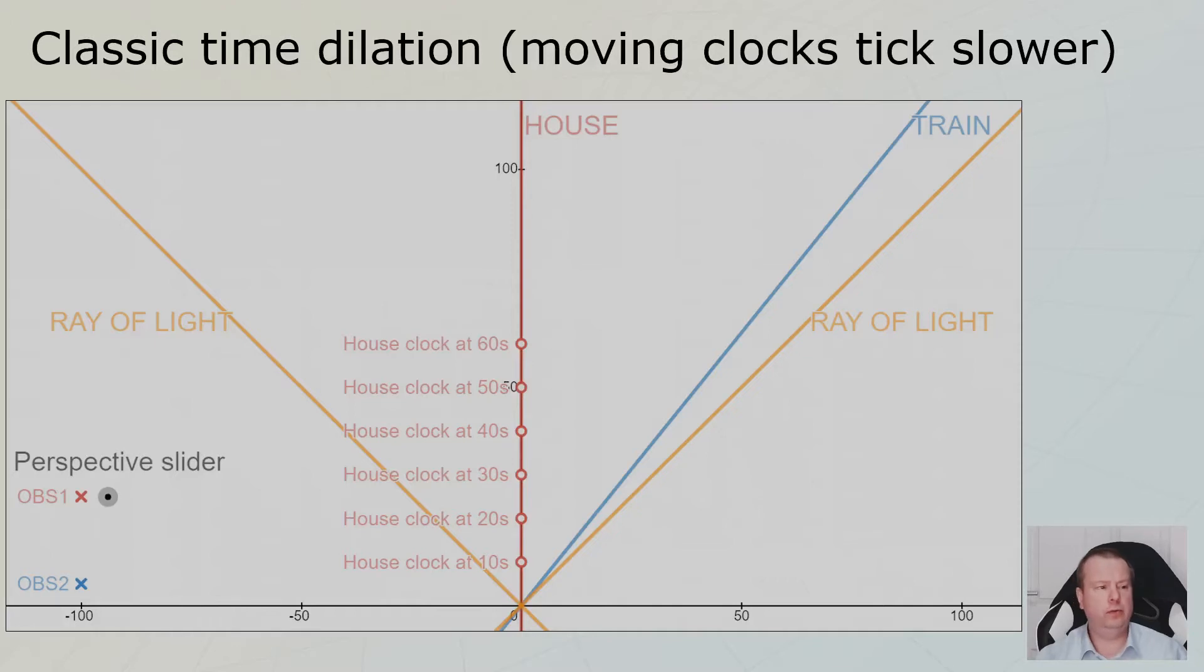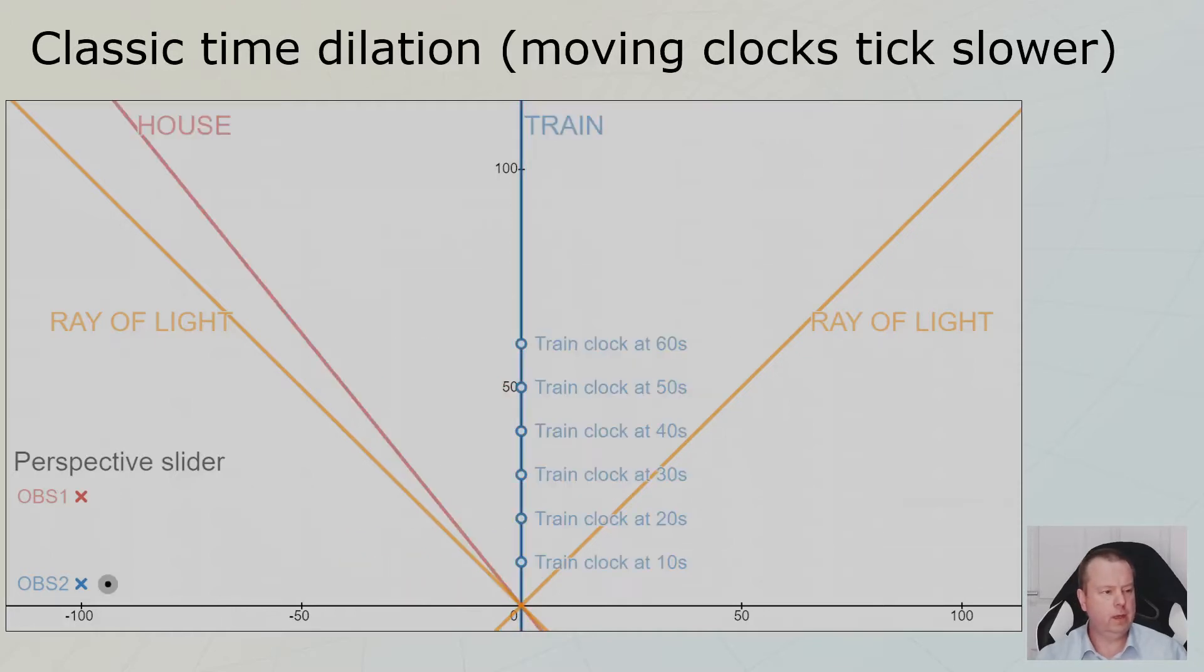But now, for now, focus on the pictures. This is how the world looks from the perspective of the train. His clock is steadily ticking second by second. From his perspective, the train's perspective, the clock is not ticking any slower. It's ticking just as it has always ticked. And the house is moving to the left with 80% of the speed of light.